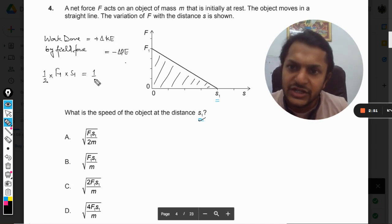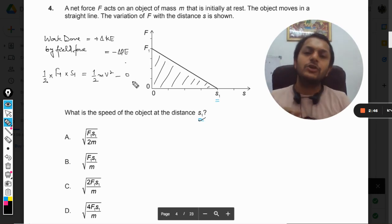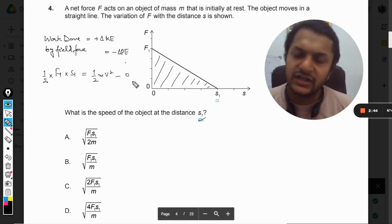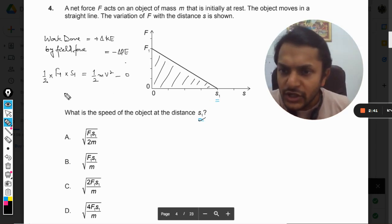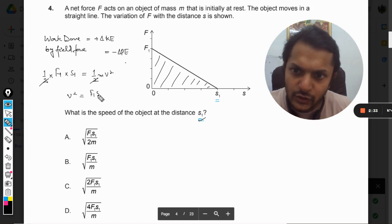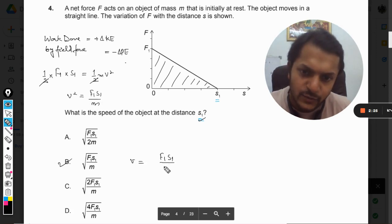This will be equal to change in kinetic energy. Finally, our kinetic energy is (1/2)mv^2, and initially because the body was at rest, the kinetic energy initial is equal to zero. From here we can find v. This two gets cancelled, so v^2 equals F_1*s_1 divided by m. Therefore, v equals square root of F_1*s_1 divided by m. B is the answer.